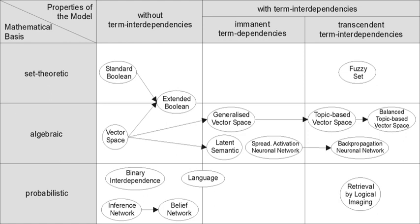Most IR systems compute a numeric score on how well each object in the database matches the query, and rank the objects according to this value. The top ranking objects are then shown to the user. The process may then be iterated if the user wishes to refine the query.